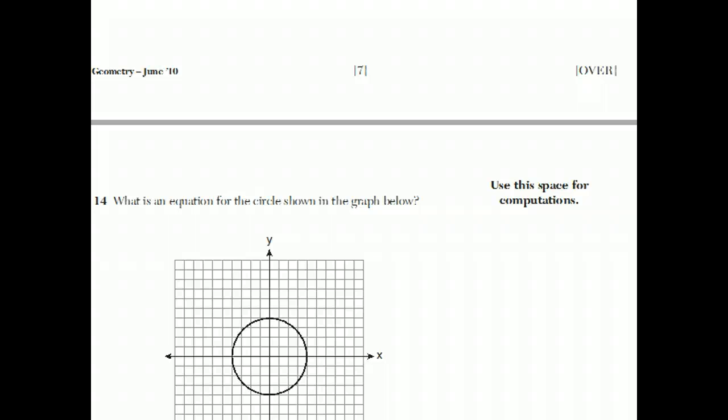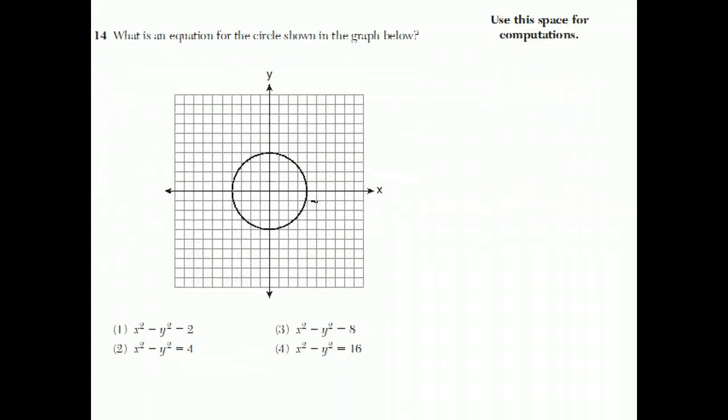Moving on to question 14. What is an equation for the circle shown in the graph below? Well, if you have a circle that's centered on the origin, the equation's always going to be x squared plus y squared equals whatever the radius squared is. And the radius is 1, 2, 3, 4, which is why the answer to this question is x squared plus y squared equals 16. I think this somehow didn't come out right. The answer is choice number 4.